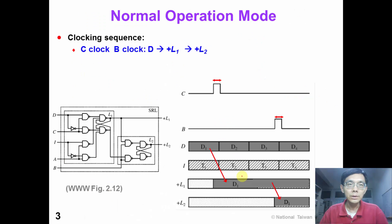This slide shows the normal operation mode of the SRL. In normal operation mode, when we pulse a C clock, the data from D input is captured in the master latch. When we pulse a B clock, the data is then transferred to the slave latch, and the data is coming out from the output plus L2.